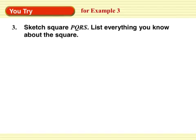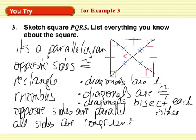Now do the same thing with a square. A square is a parallelogram — opposite sides are congruent. It's a rectangle. It's a rhombus. Opposite sides are parallel. All sides are congruent. Diagonals are perpendicular. Diagonals are congruent. Diagonals bisect each other. Lots of information about a square, because in the Venn diagram, a square is everything — a parallelogram, a rectangle, a rhombus.